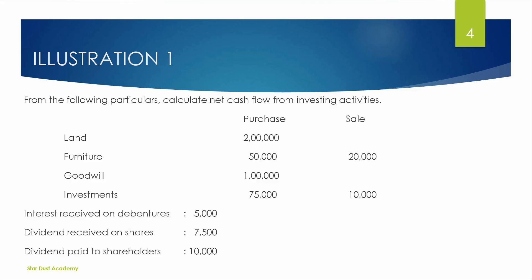Next, dividend paid to shareholders. Dividend paid to shareholders is a financing activity, not an investing activity. The company's investment in shares goes under investing activities, but dividend paid to shareholders is classified as financing activities. Dividend paid to shareholders — we invest in shares, but paying dividends is financing.